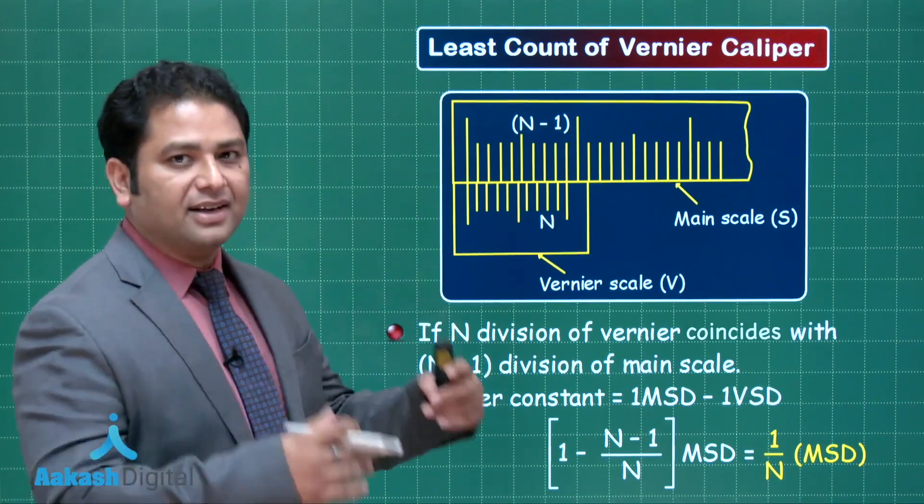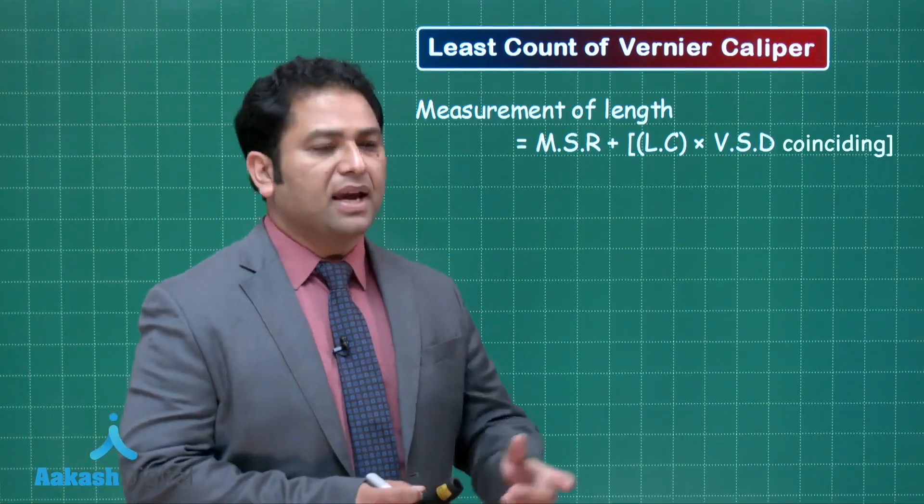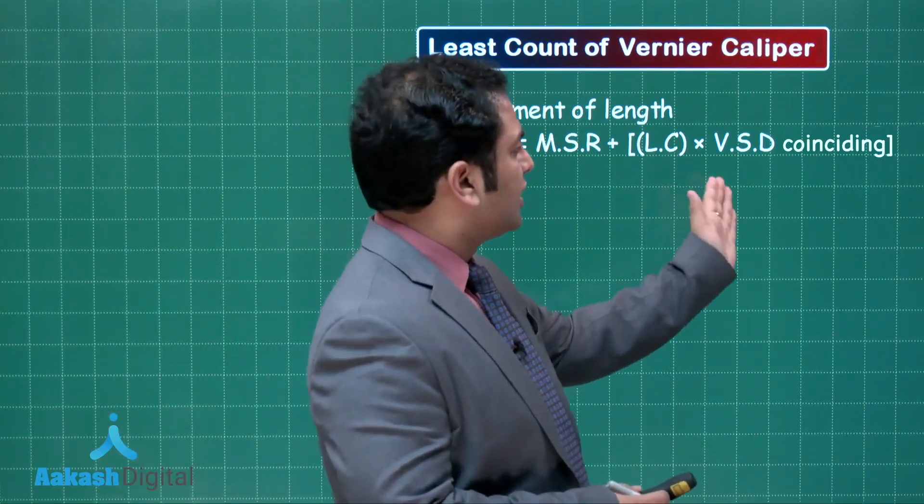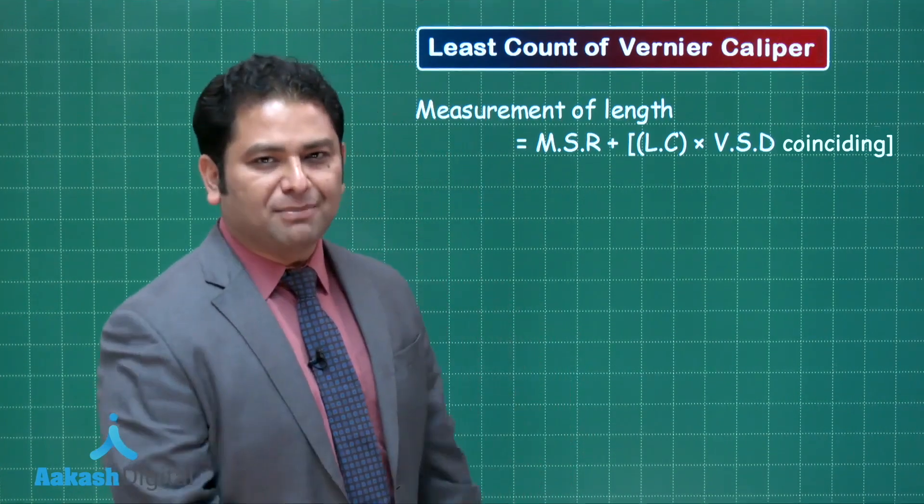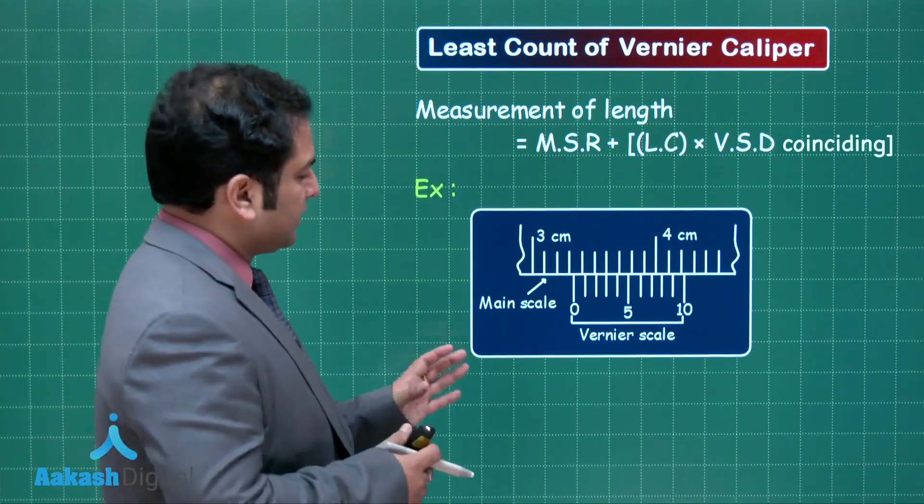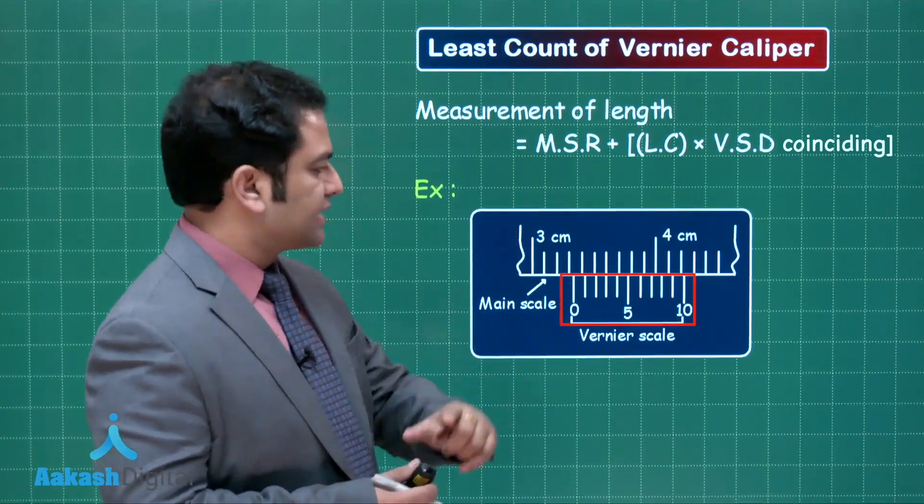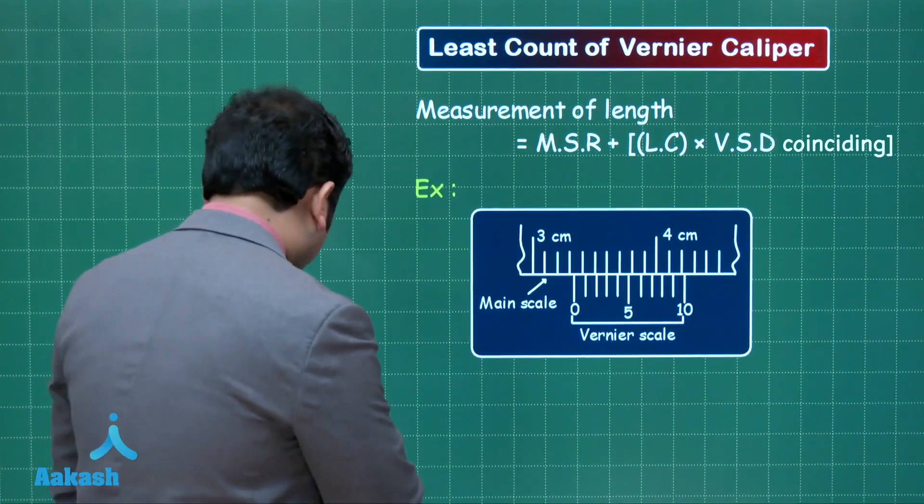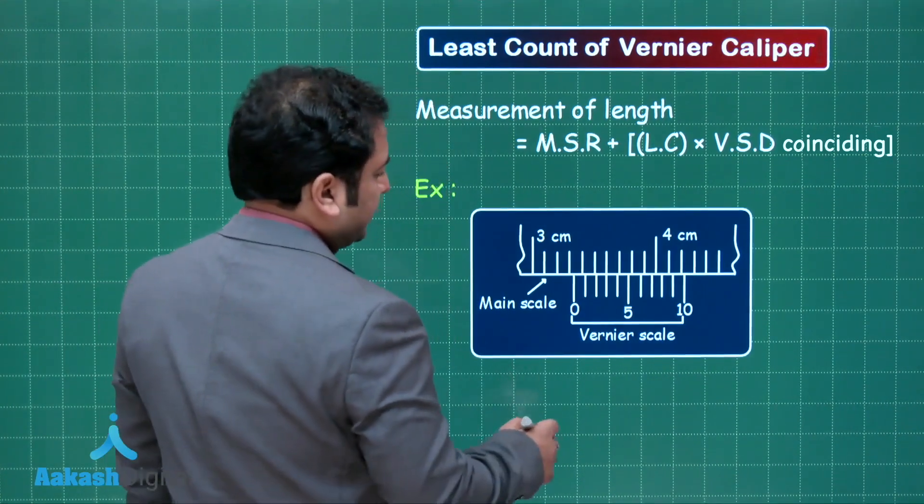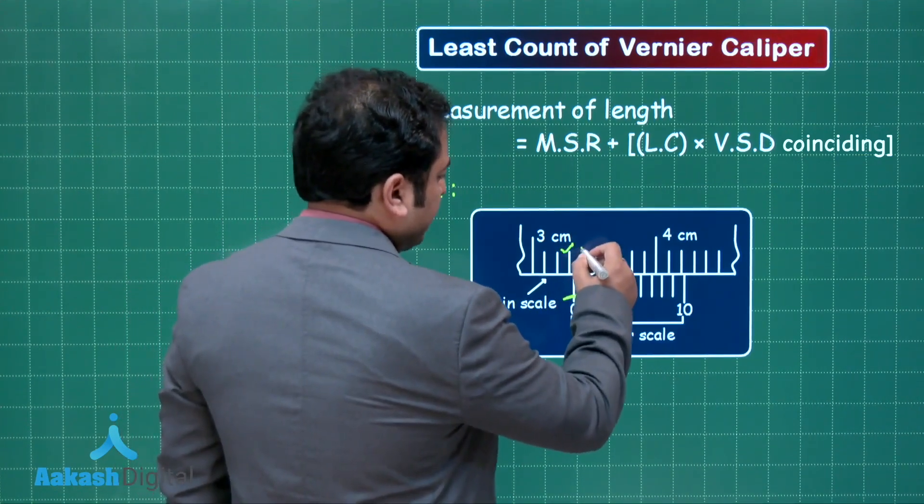Now let's try to see how the readings would be taken. Any measurement would be the main scale reading plus the least count, same as the Vernier constant, into Vernier scale division coinciding. A figure will make it clear. Say while making the measurement, an object fits here. The main scale is there, the Vernier scale is there. How are we going to find the reading? Focus where is zero of the Vernier.